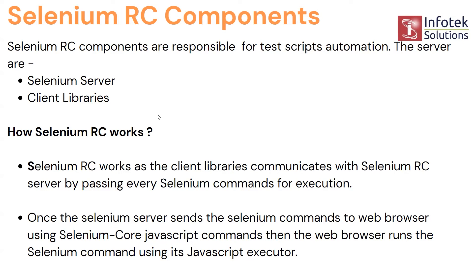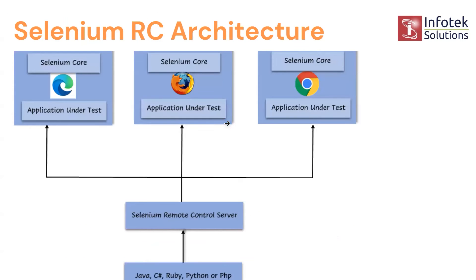Now if you want to understand the complete picture, this is how it looks like. These are different languages that you can choose from — pick any one language and use the Selenium Remote Control server. Once a command is passed through the server, it gives the output on different browsers. If the command is for Chrome browser, it gives the output on Chrome; if it's for Firefox, it goes to Firefox. This is the complete structure of Selenium RC.